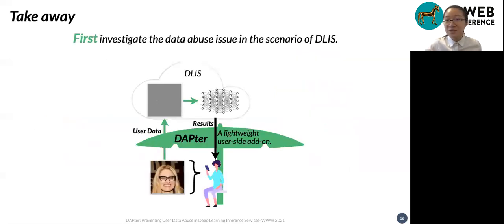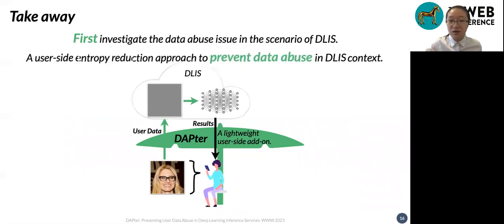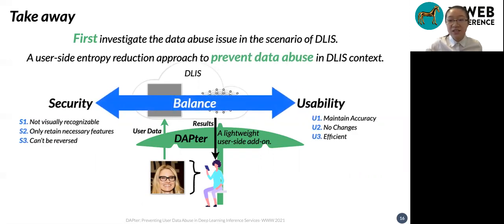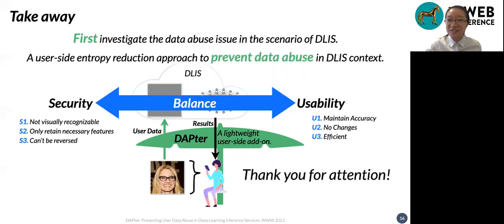To summarize our work: we first investigate the data abuse issue in the deep learning inference scenario. We then propose DAPTOR, a user-side entropy reduction approach to prevent data abuse. Our protection achieves a good security and usability balance. Thank you so much for your attention.